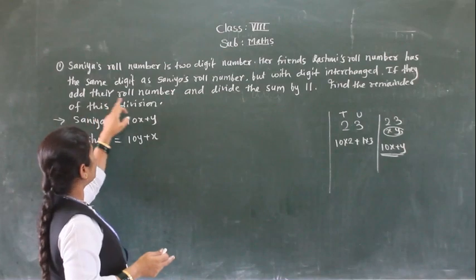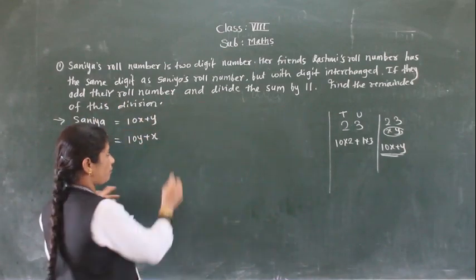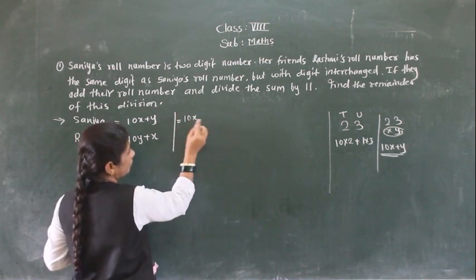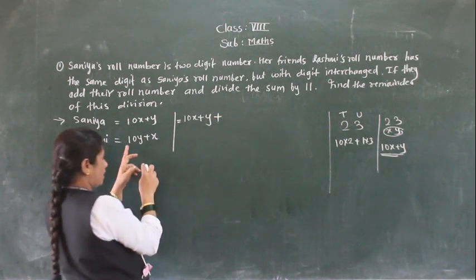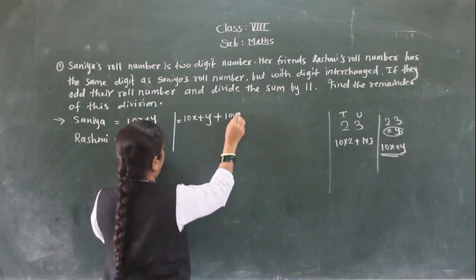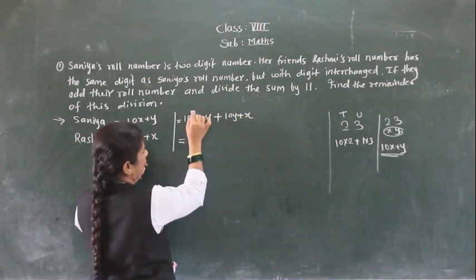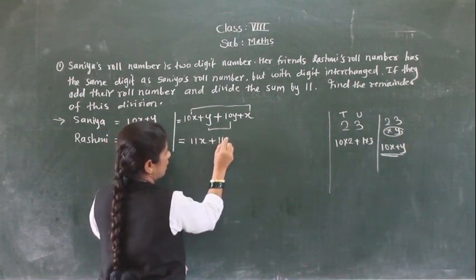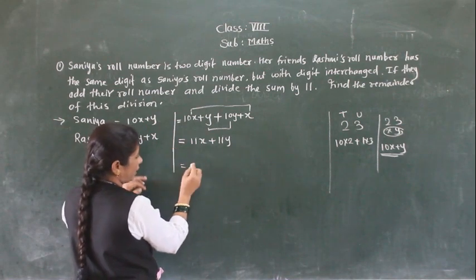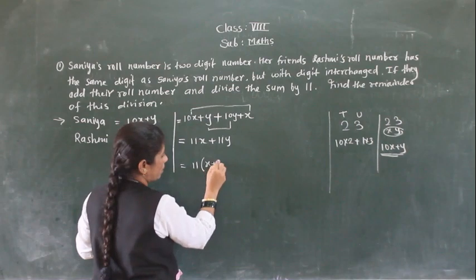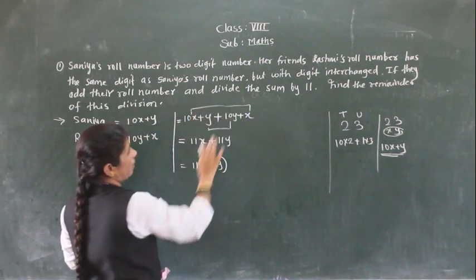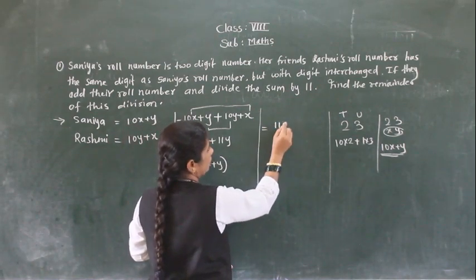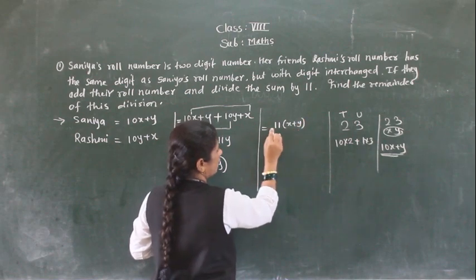Afterwards, if we add the roll numbers and divide by 11. So now we have to add them. Samia's roll number is 10x plus y and Rashi's roll number is 10y plus x. So the sum is 10x plus y plus 10y plus x, which equals 11x plus 11y. So what is common here? We can take 11 outside: 11(x plus y).